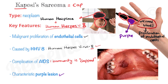Let's summarize the whole cap story. When you put a tight pen cap on your finger, it becomes purple and it screams for more blood, leading to proliferation of endothelial cells. Also remember the cap is a human hairpiece that makes your head look like the number 8, meaning Kaposi's sarcoma is caused by human herpesvirus 8. Finally, which disease presents with a capped immunity? AIDS — so Kaposi's sarcoma is a complication of AIDS.